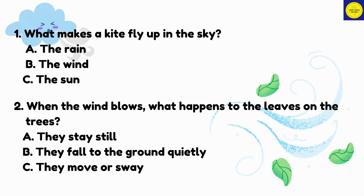Number 2: When the wind blows, what happens to the leaves on the trees? A. They stay still. B. They fall to the ground quietly. C. They move or sway.